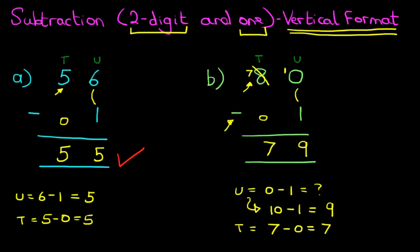And that is our answer. 80 minus 1 equals 79. And that is how we subtract a two-digit number and the number 1 using the vertical format.